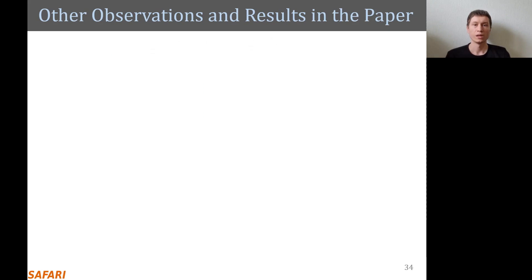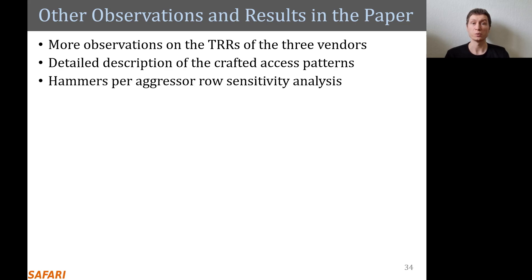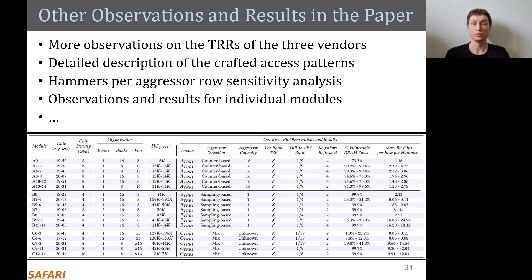In our paper, we have more observations regarding how the TRR mechanisms of the three vendors operate, a detailed description of the RowHammer access patterns we crafted, a sensitivity study on how the number of RowHammer bit flips changes when we sweep the number of hammers per aggressor, and observations and results for individual DRAM modules.